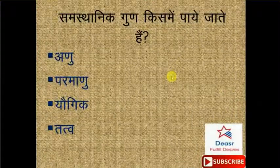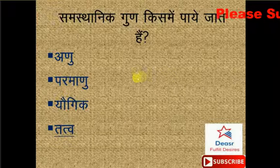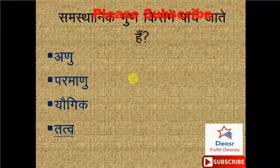Samsthanik (isotopes) gun kis mein paaye jaate hain? Options hain hamare paas: anu, parmanu, yaugi, tatva. Iska sahih jawab hai, doston - tatva. Option number D yahan pe correct hai.